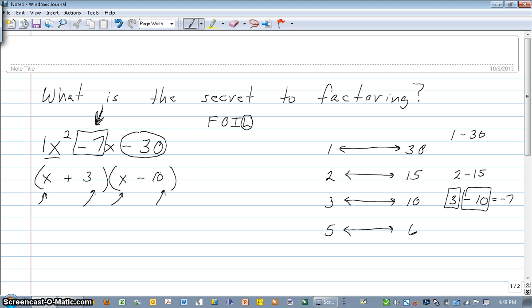And now, of course, you can check that by using your FOIL method. So your check would be use your FOIL method: first, outside, inside, last. And then as long as these middle two terms add up to the one that you started with, which they do, negative 7x, then you've got the correct factorization.